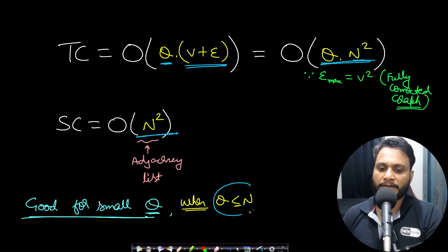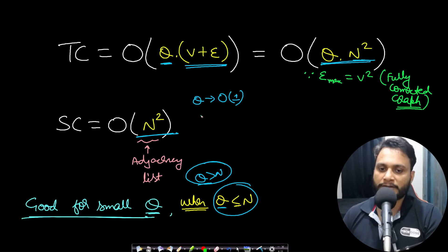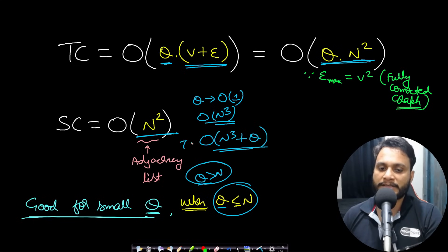For a small number of queries, DFS or BFS is optimal. But when the number of queries is large — queries greater than n — we can do preprocessing so each query is answered in O(1). The preprocessing uses Floyd-Warshall and takes O(n³) time. After preprocessing, each query is O(1). So for large queries the total complexity is O(n³ + Q), making Floyd-Warshall the better approach.